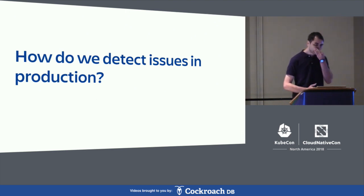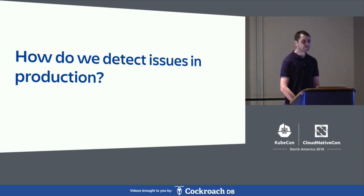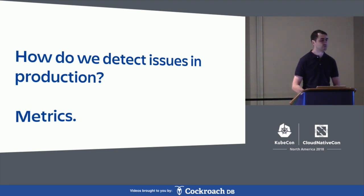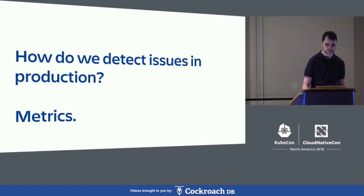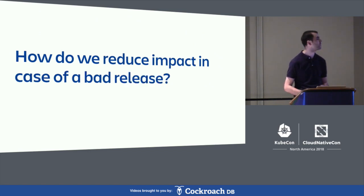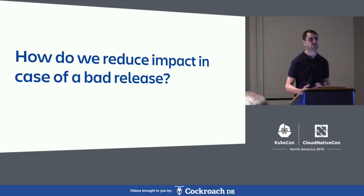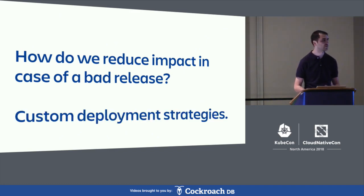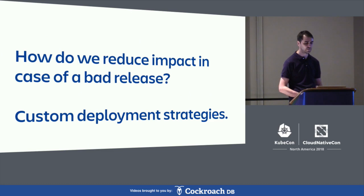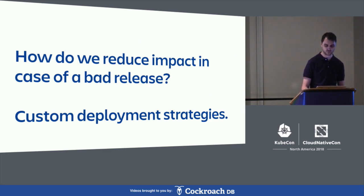The next question is: how do we detect issues in production? We use metrics. For example, we can monitor the number of failed requests over the last five minutes and make a decision whether there's a regression. Also, if there is a bad release, it affects 100% of users. It would be nice to reduce the impact of a bad release, and to achieve that, we can use custom deployment strategies rather than just a single deployment object.